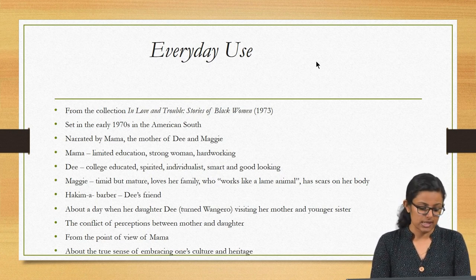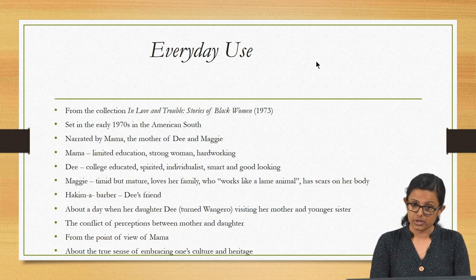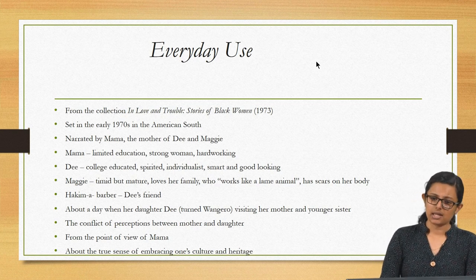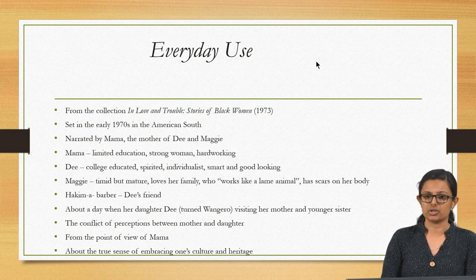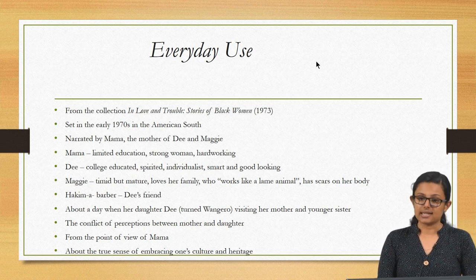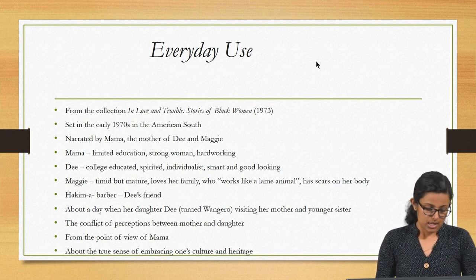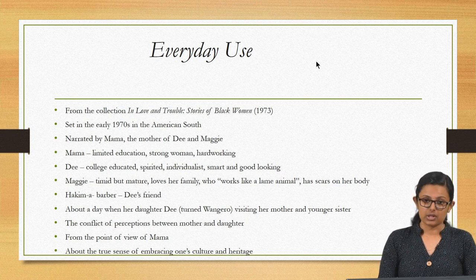Dee is the elder daughter, highly educated, having gone to school with funds raised by her mother and the church. She is very confident, strong-spirited, and good-looking. Maggie, on the other hand, is not as educated or confident — she is shy and timid, but loves her family deeply. She has scars from a fire when their home burned down. There is also a minor character, Hakima Barbar, who is Dee's friend.